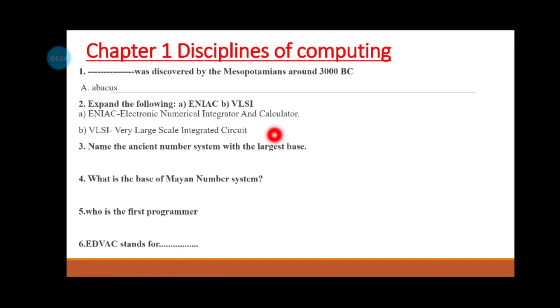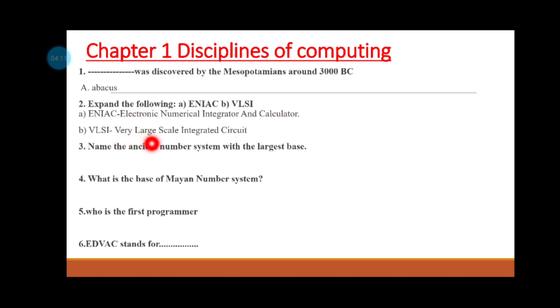Expand the following: ENIAC and VLSI. ENIAC is called Electronic Numerical Integrator and Calculator. VLSI is called Very Large Scale Integrated Circuit. Now we will discuss the generation of computers and short forms and abbreviations.